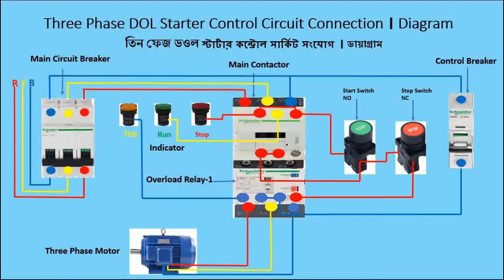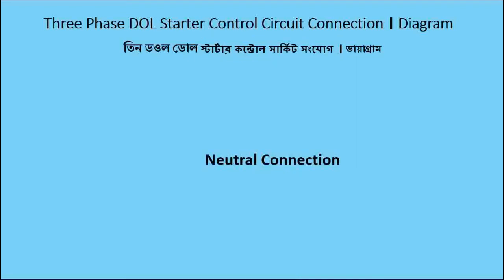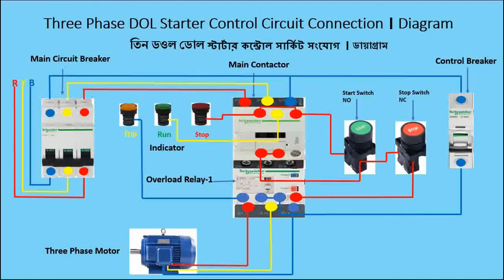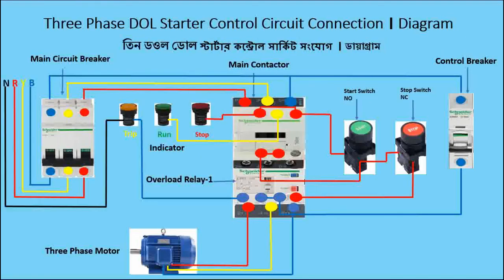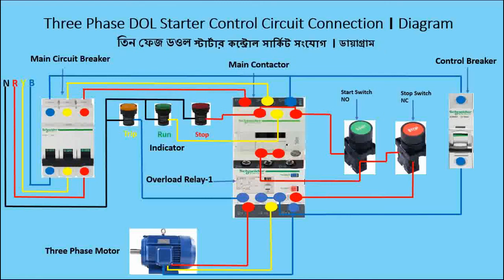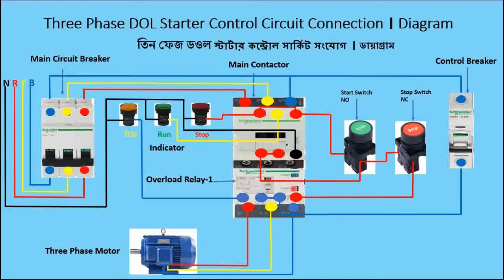The control wiring is complete. Now I will show the neutral wire connection. Neutral is only for control — the neutral wire first goes to the first indicator, then the second indicator, then the third indicator, then to the main contactor. This is the total wiring for the three-phase DOL starter control circuit connection.